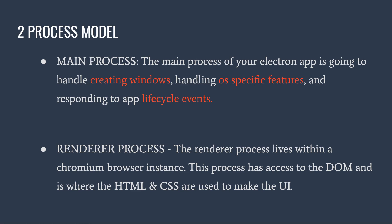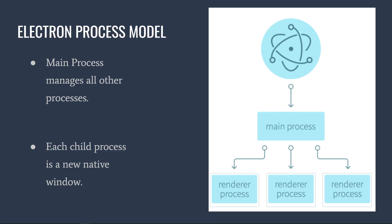This lets us leverage the power of HTML and CSS in the browser, but also use that alongside powerful lower-level things like the file system and the operating system. The Electron process model can be visualized with a main process at the center, from which we can create separate renderer processes. Multiple renderer processes can be independent of each other and send messages back and forth, however they cannot communicate directly to each other.